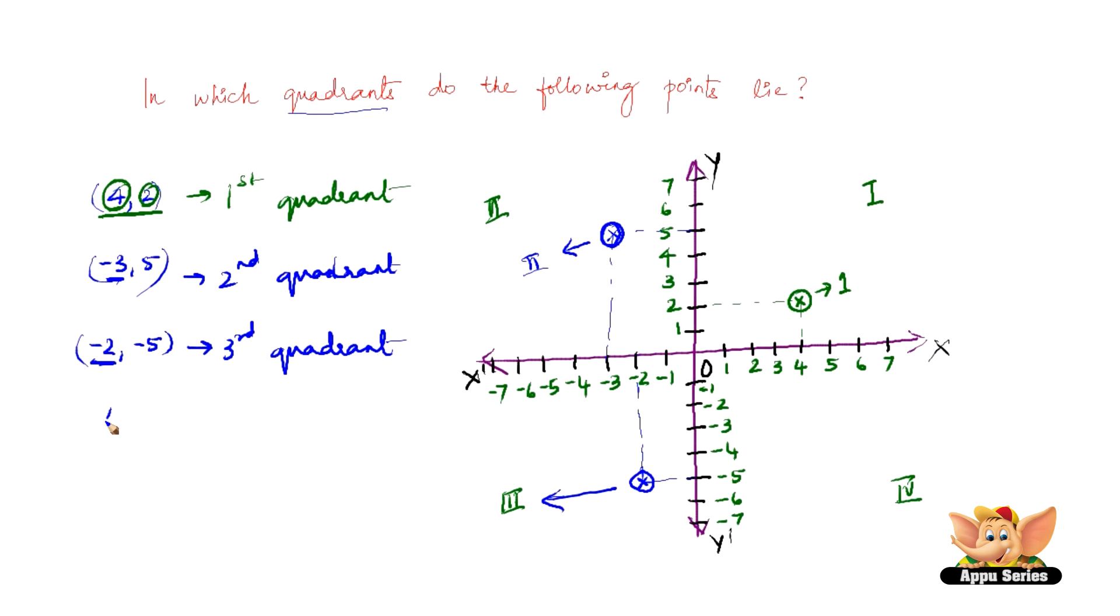And then, we have (4,-2). 4 is again positive on the x-axis. So here it is. Minus 2 is negative y-axis. That is this one. So therefore, we need to plot it somewhere here. So this is the fourth point. Fourth point lies in the fourth quadrant.